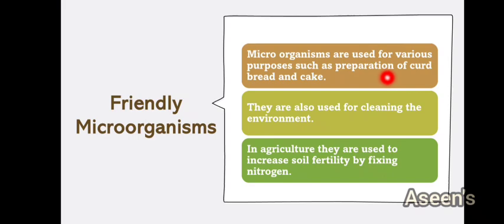Microorganisms are used for various purposes such as preparation of curd, bread, and cake. All that fluffiness and sponginess you get in bakery food is because of microorganisms. Even curd — milk turns into curd by the action of bacteria; if bacteria is absent, your milk will never turn into curd. Microorganisms are also used for cleaning the environment, scavenging the earth, and removing dead and decaying matter.